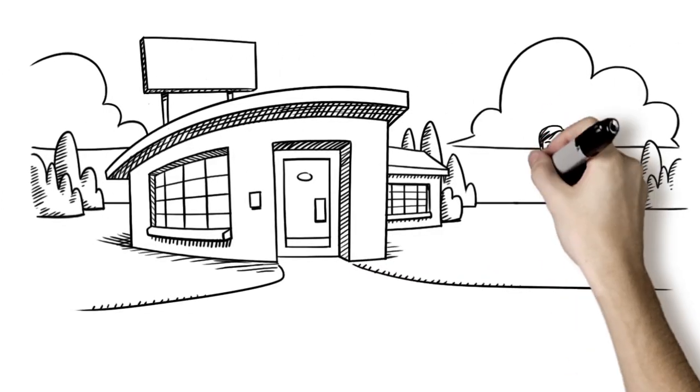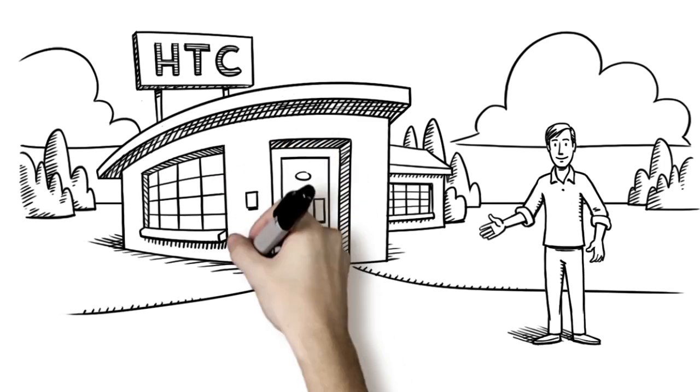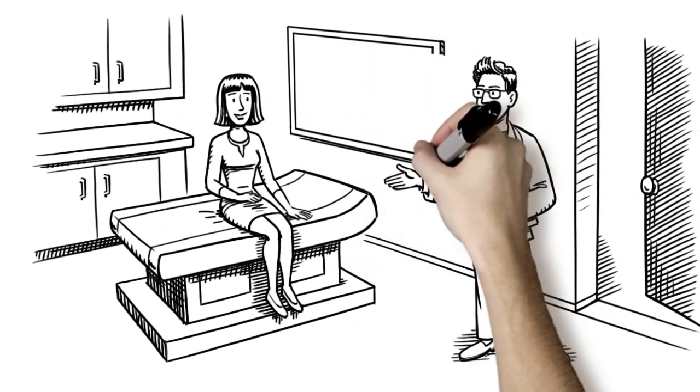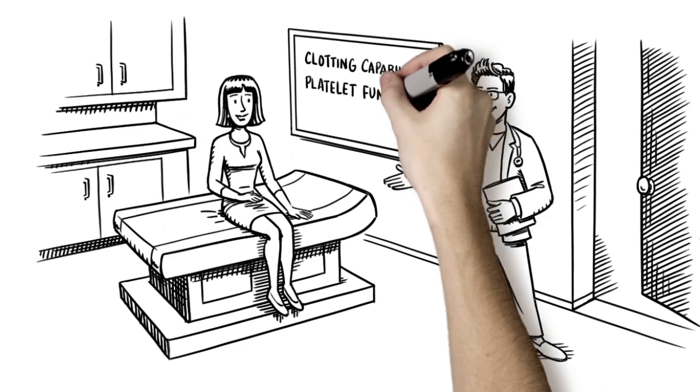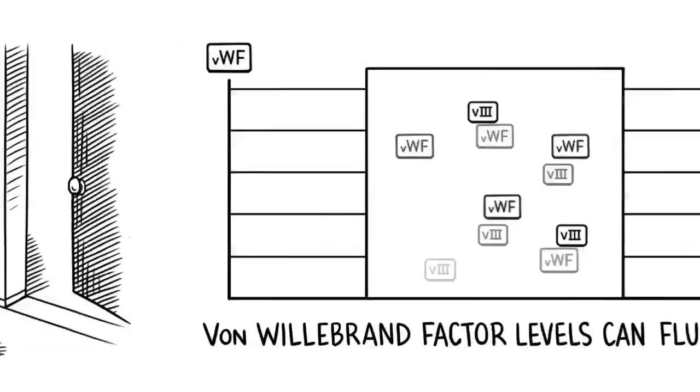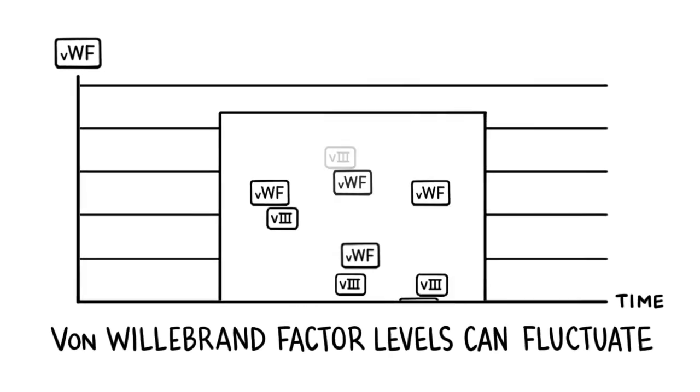The best place to diagnose a bleeding disorder is at a hemophilia treatment center or HTC. Here your hematologist will perform various tests to evaluate clotting capability, platelet function, and factor protein levels. Some tests may have to be repeated because von Willebrand factor levels can fluctuate in the body.